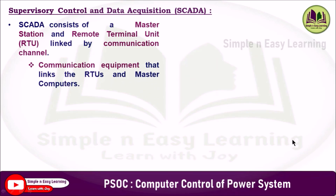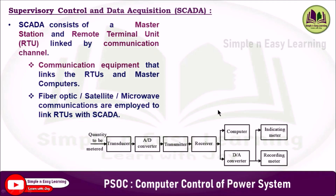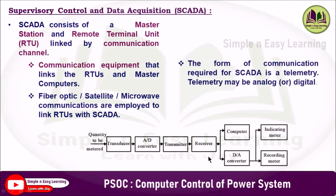The third component is the communication equipment that links the RTU and the master computer. It may use fiber optic, satellite communication, or microwave communications to link the RTU with the SCADA system. The form of communication required for SCADA is telemetry, which may be analog or digital.